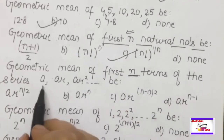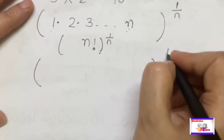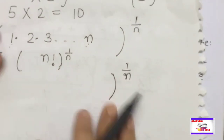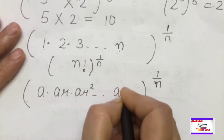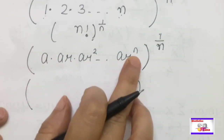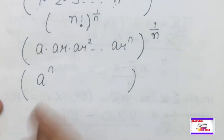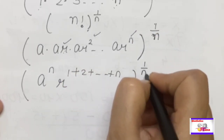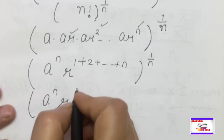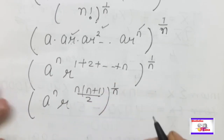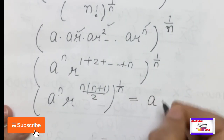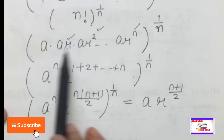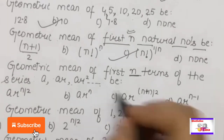Geometric mean of the first N terms of a GP series A, AR, AR², ..., AR^(N-1): GM = (A·AR·AR²·...·AR^(N-1))^(1/N). A appears N times so A^N; for R the powers 0+1+2+...+(N-1) = N(N-1)/2, but with N terms 0 to N-1 the sum is N(N-1)/2. After simplification: GM = A · R^((N+1)/2). This is the answer.